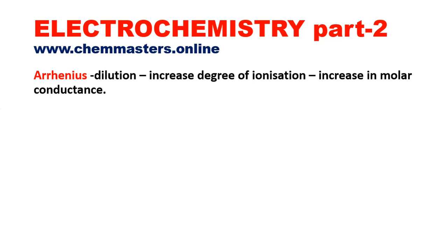As we know from Arrhenius theory of electrolytes, on dilution, molar conductance increases just due to an increase in the degree of ionization of that particular electrolyte. According to Arrhenius theory, on dilution, molar conductance increases due to an increase in the degree of ionization. But this is not exactly correct for strong electrolytes.